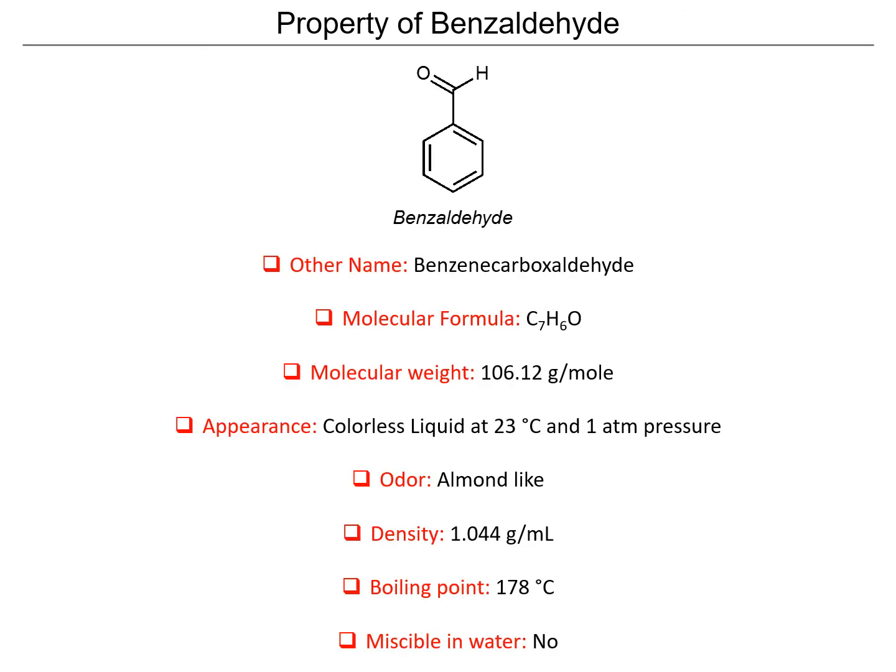In this slide we show the properties of benzaldehyde. The other name it has is benzene carboxyaldehyde. Here we show the molecular formula and the molecular weight, which is 106.12 grams per mole. The appearance is as a colorless liquid at 23 degrees and one atmosphere of pressure. It has a strong almond-like odor, a density of 1.044 grams per ml, a boiling point of 178 degrees, and it's not miscible in water.